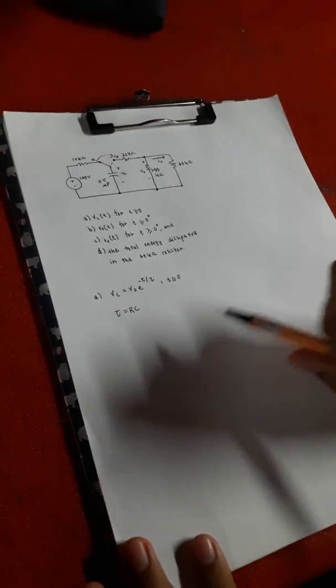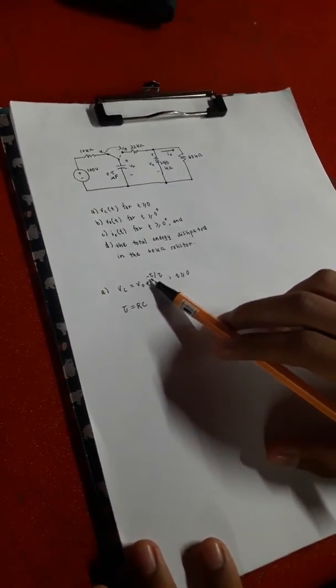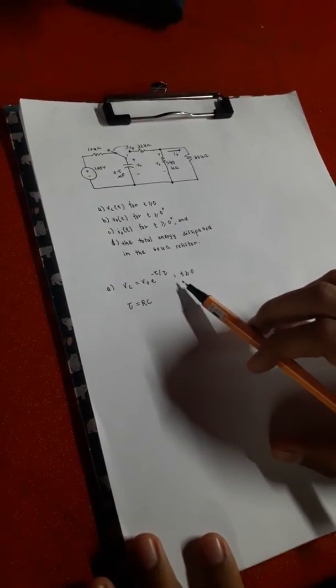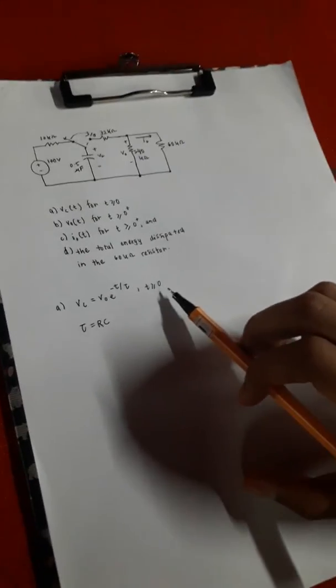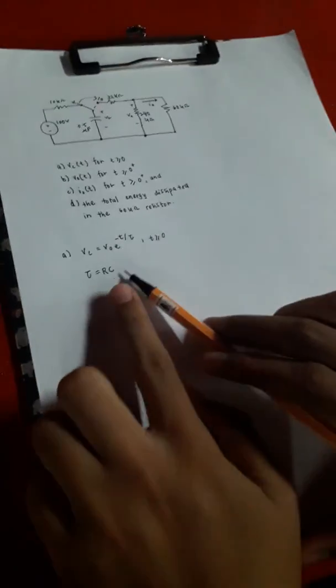For finding the VC, so we have V0 exponent power of negative T over tau for T equals to or more than zero. So firstly, we need to find the tau. To find tau, we must use RC.